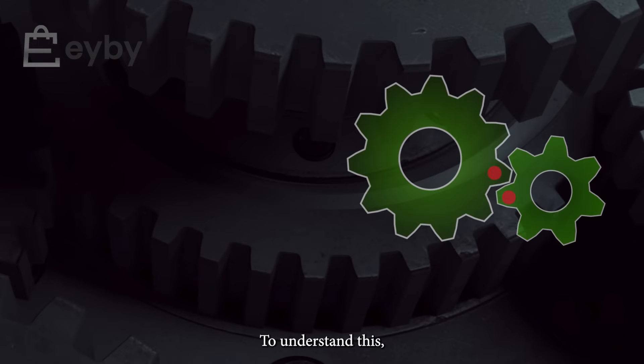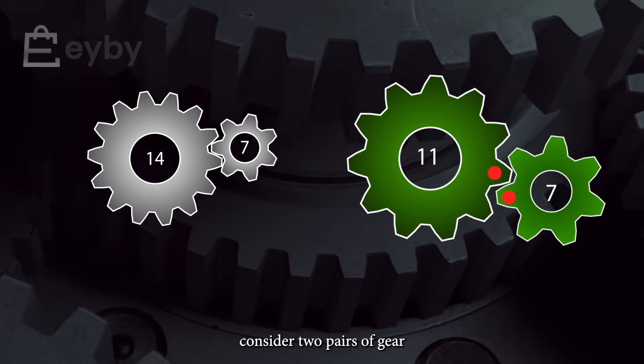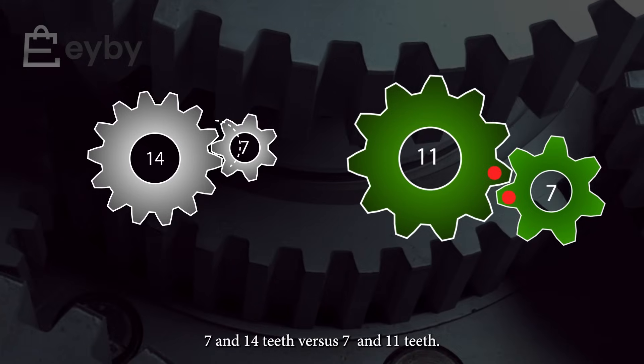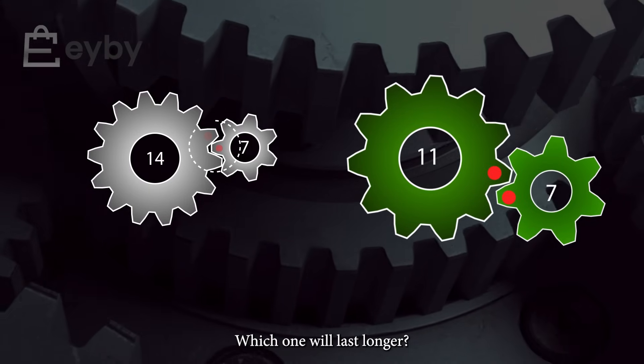To understand this, consider two pairs of gears: 7 and 14 teeth versus 7 and 11 teeth. Which one will last longer?